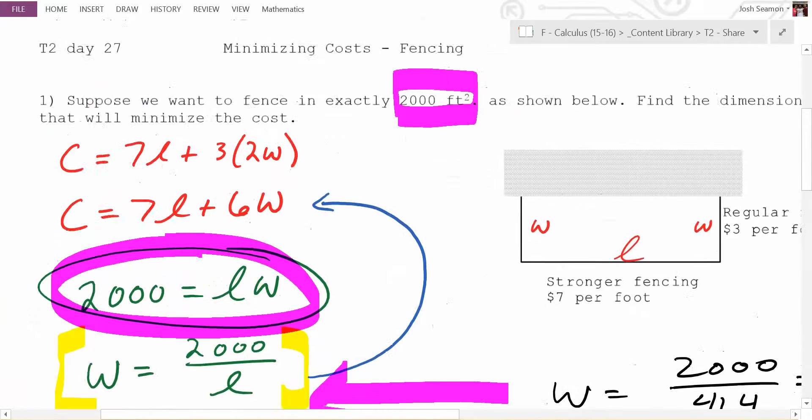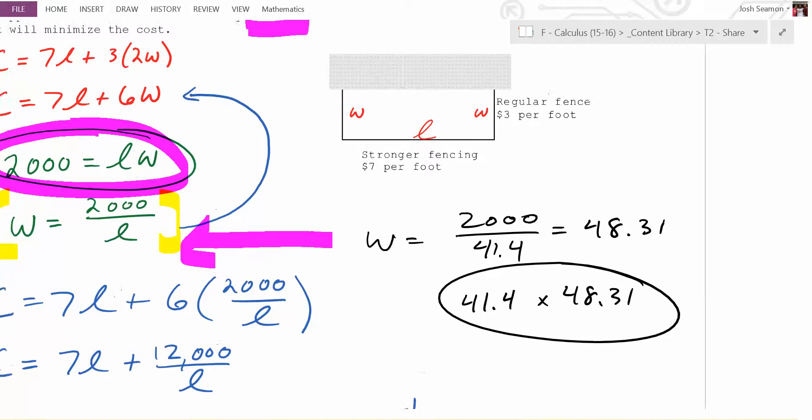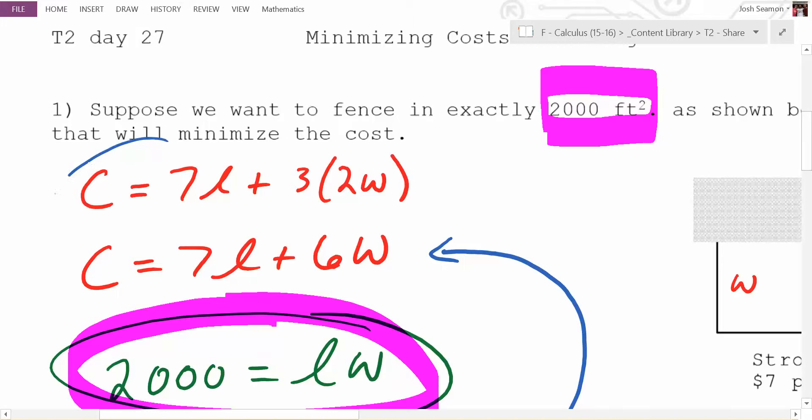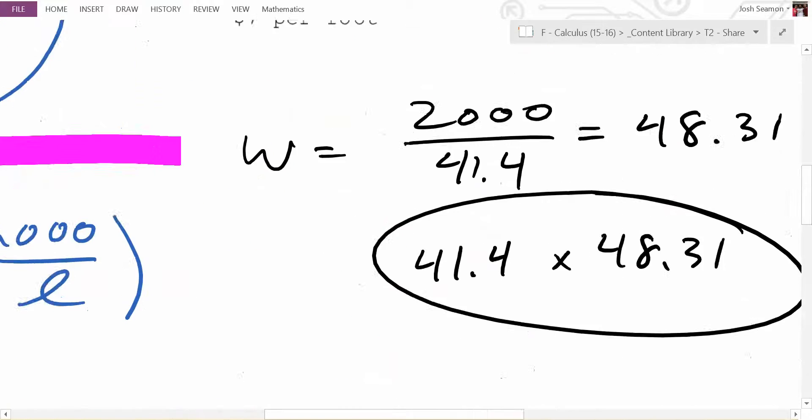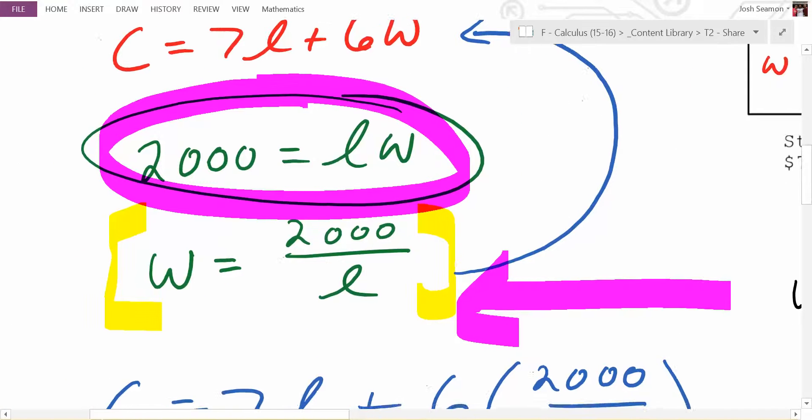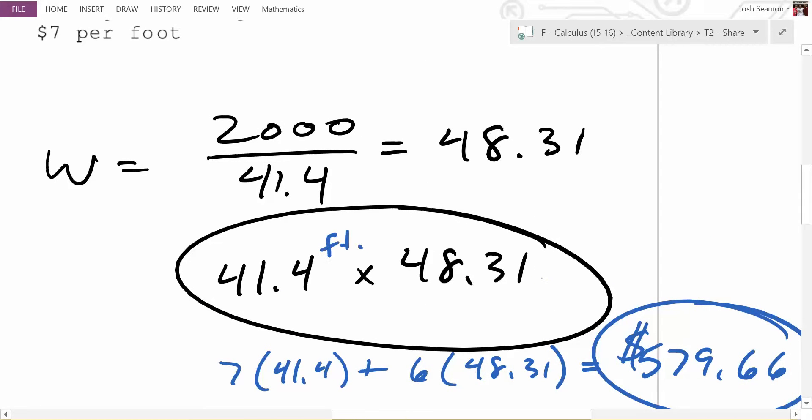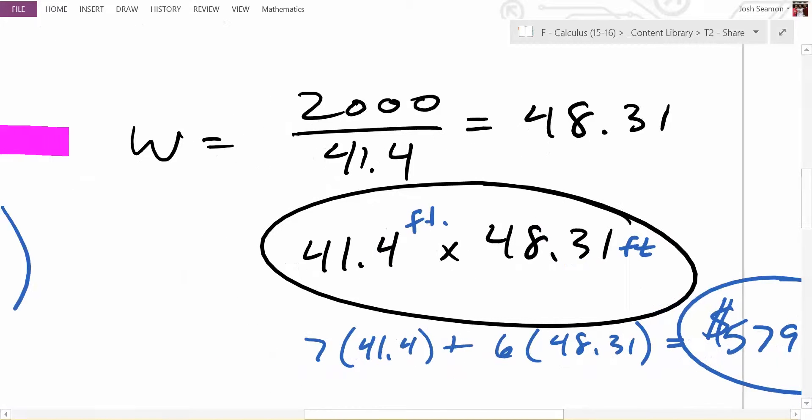What haven't we found though? It didn't ask us for it, but what haven't we actually found? The actual price. Right, Lizzie. Could we find that price? Yeah. Sure. It's the first equation we found here, right? So it would be 7 times 41.4 plus 6 times 48.31. What's that going to be? 579.6. So the minimum cost is going to be $579, and it would be 41.4 feet by 48.31 feet.